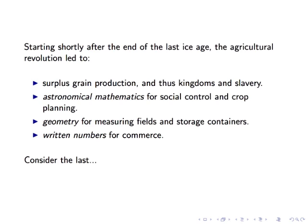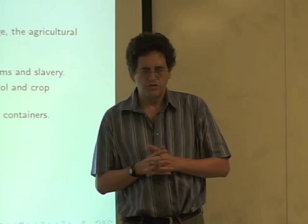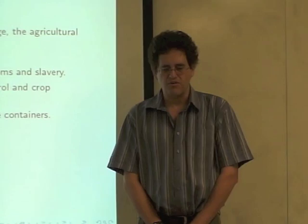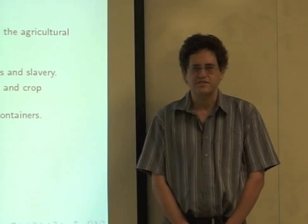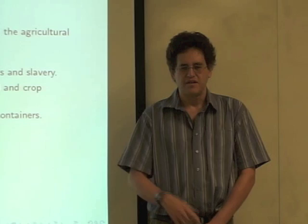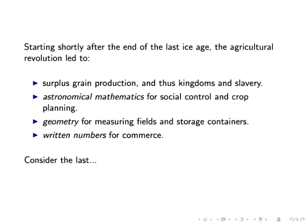It also led to slavery because for the first time, it made sense to boss somebody around and tell them to work all day for you collecting grain to add to your stores. So slavery started at that time. It led to the development of astronomical mathematics, that is detailed calendars and prediction of the sun and moon. Because first of all, that's important for agricultural production. Second of all, it's important for social control. The ability of these rulers to do things like predict eclipses was a key part of maintaining their rule in many of these old civilizations.